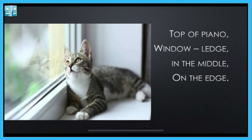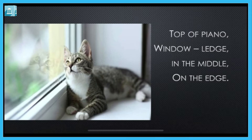Window ledge — in the picture you can see window ke paas thodi si jaga bachti hai, wahaan pe bhi ja ke woh so jati hai. That is called the window ledge. In the middle means in the center. On the edge — that is the corner, matlab ek dam kinaare pe aake bhi so jati hai.